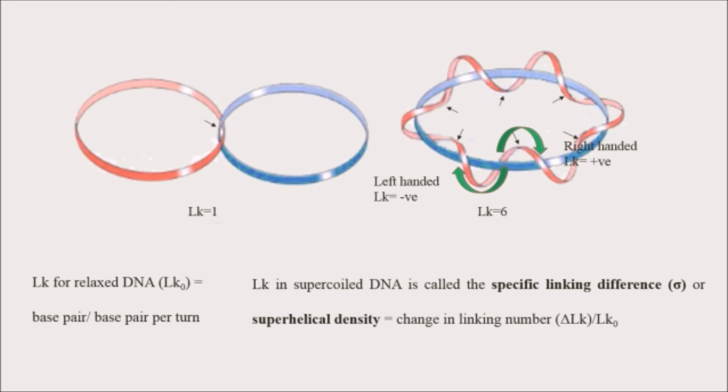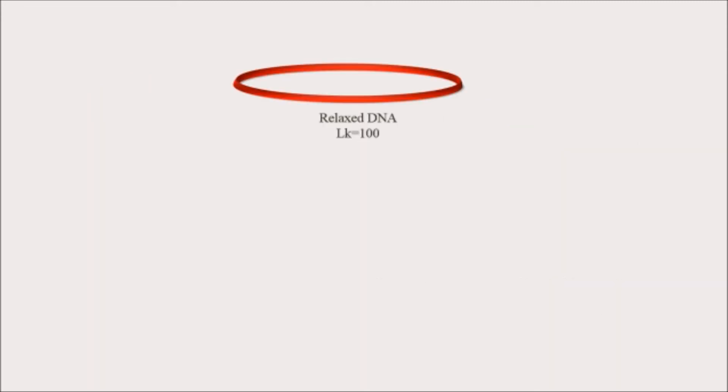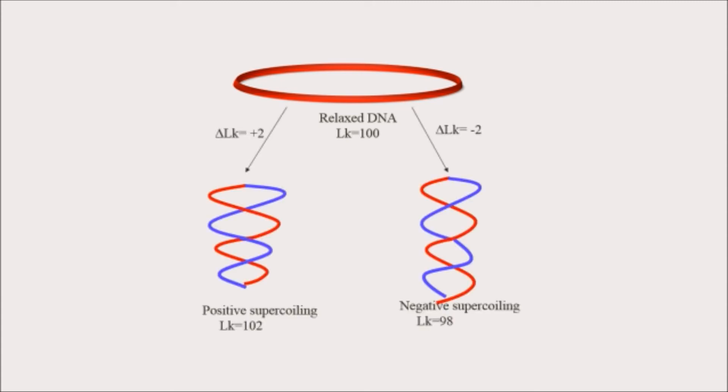Now you have learned what is the linking number, how to calculate the linking number, and I have told that it is a topological property. Suppose there is a relaxed DNA having linking number 100. This DNA has two topoisomeric forms differing only in the linking number. Suppose these two DNA get converted into the supercoil structure - one is the positive supercoil having the linking number of plus two and another is the negative supercoil having the linking number of minus two. These two forms of DNA are known as topoisomers as they differ only in their linking number.